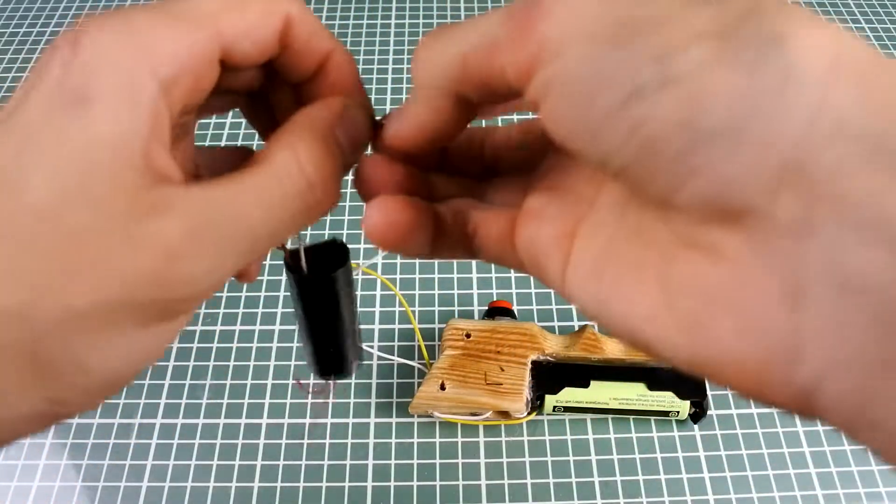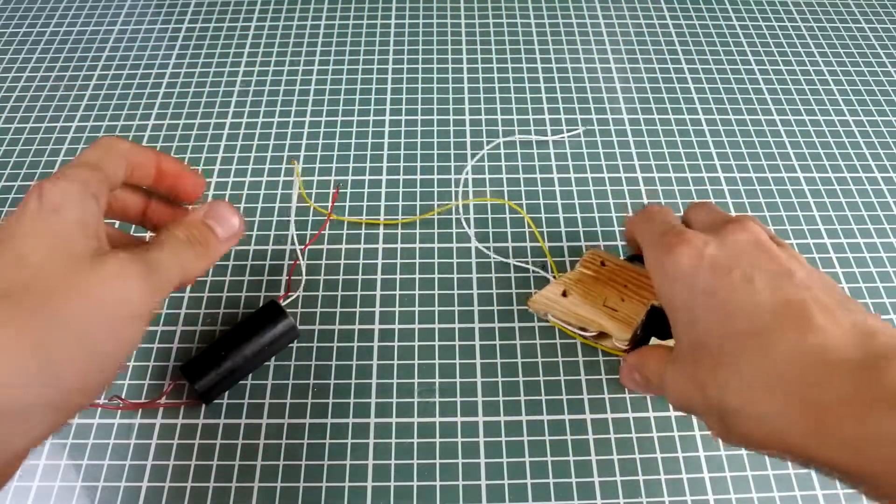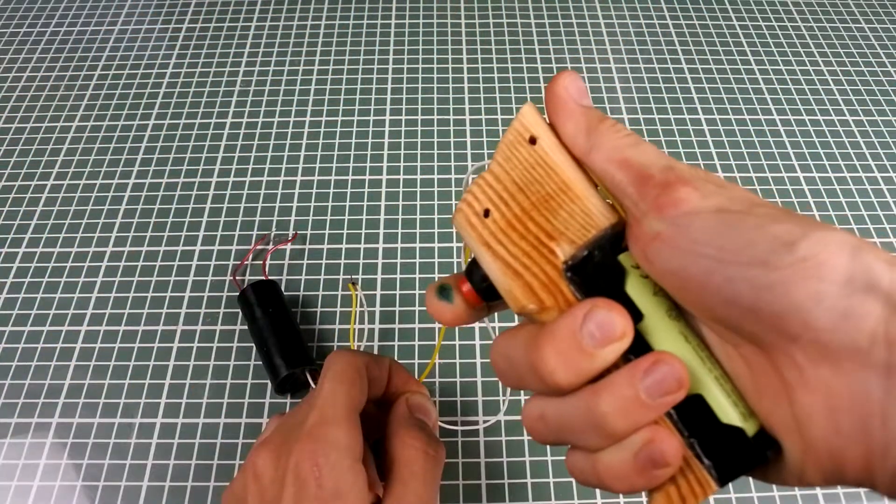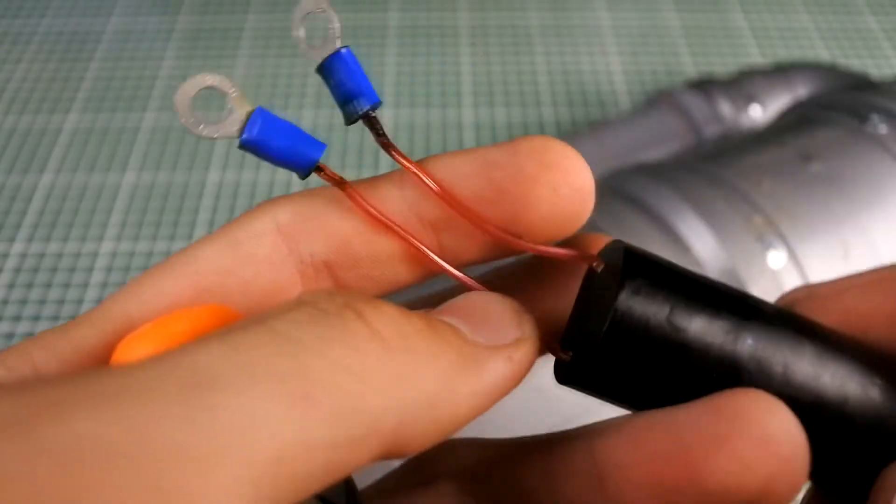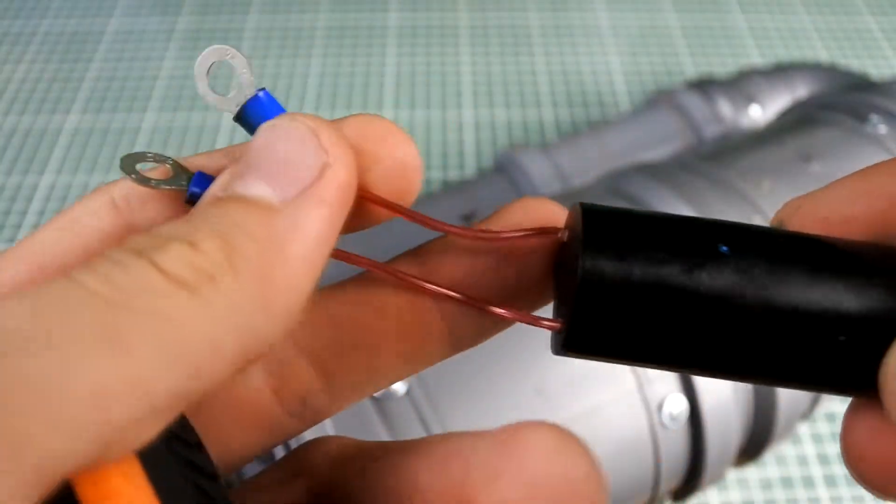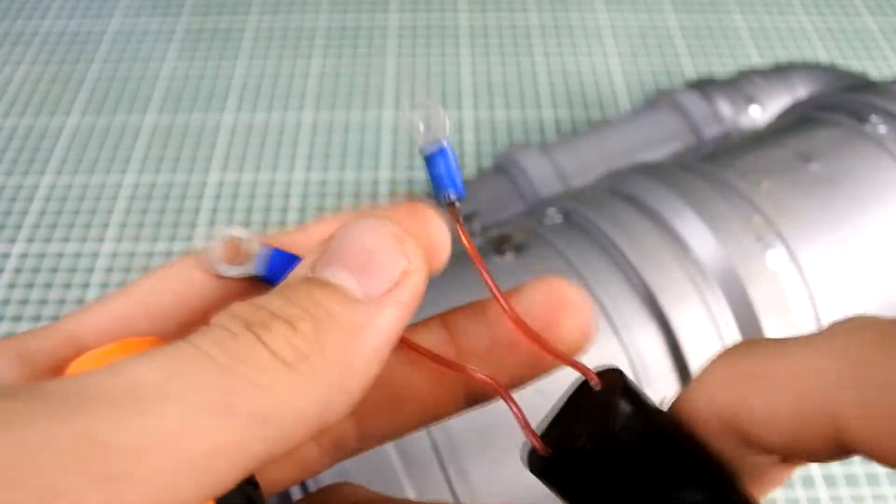That's why we need a voltage converter to 40,000 volts. It's really powerful. Fasten it on the screws that we screwed in the tank at the beginning of the video.